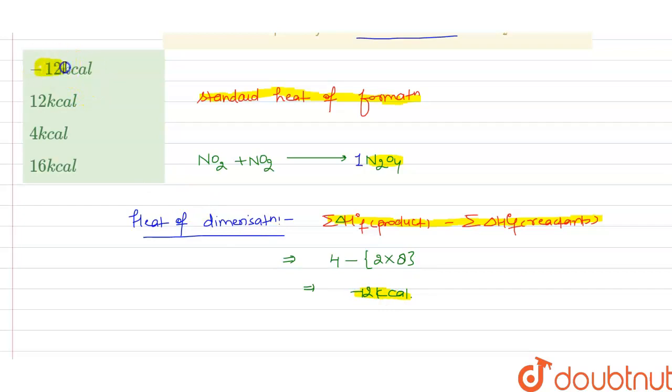So from here we can say that option first is matching with our value, that is minus 12 kilocalories. I hope you got my point. Thank you.